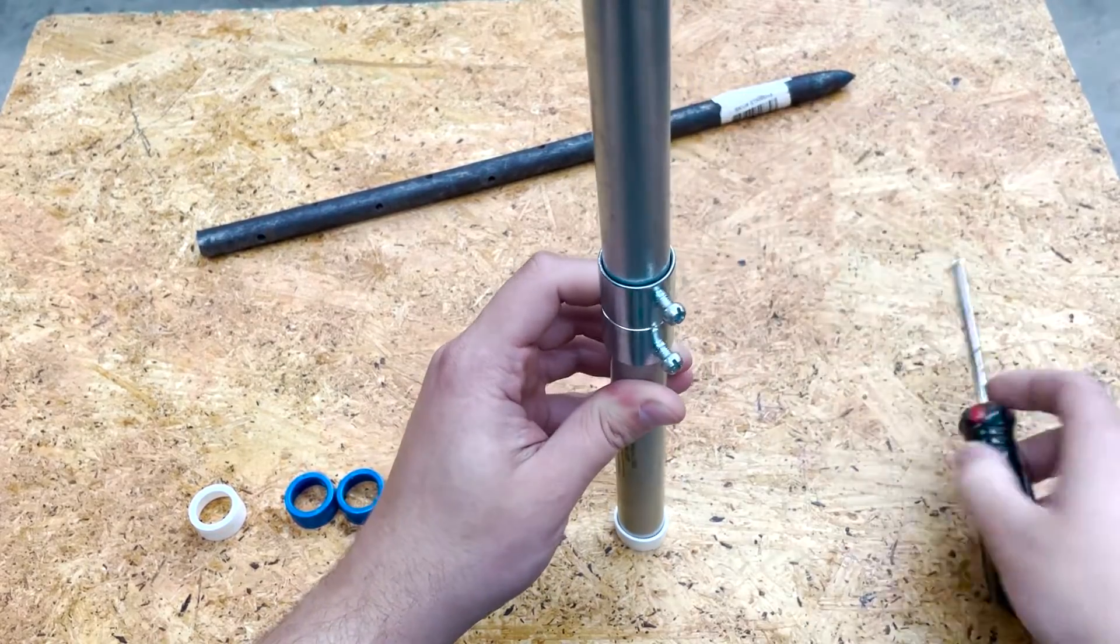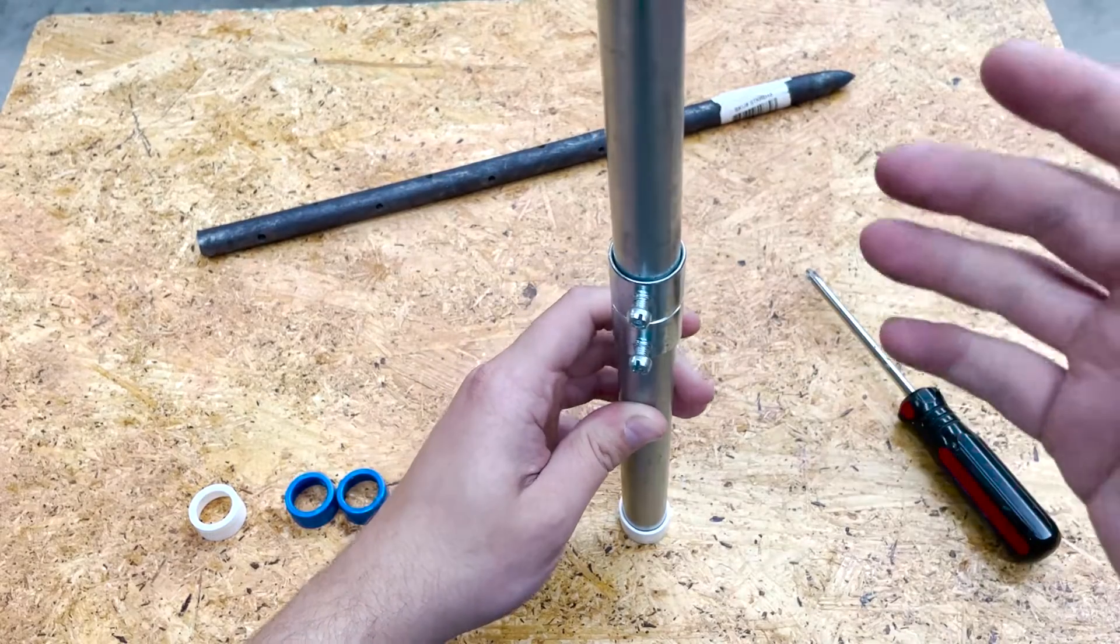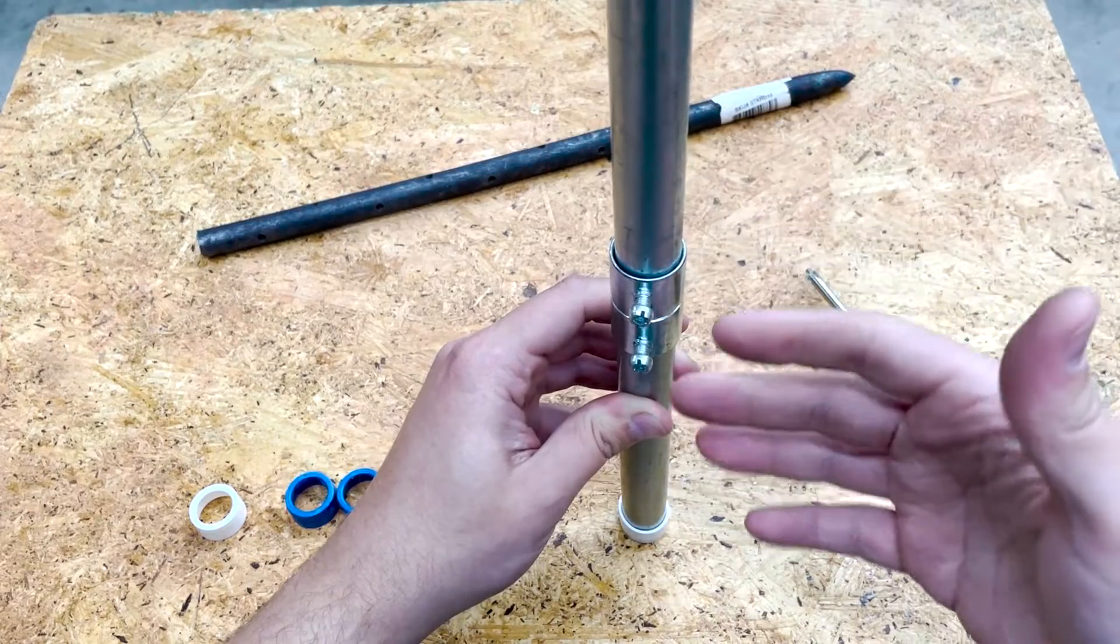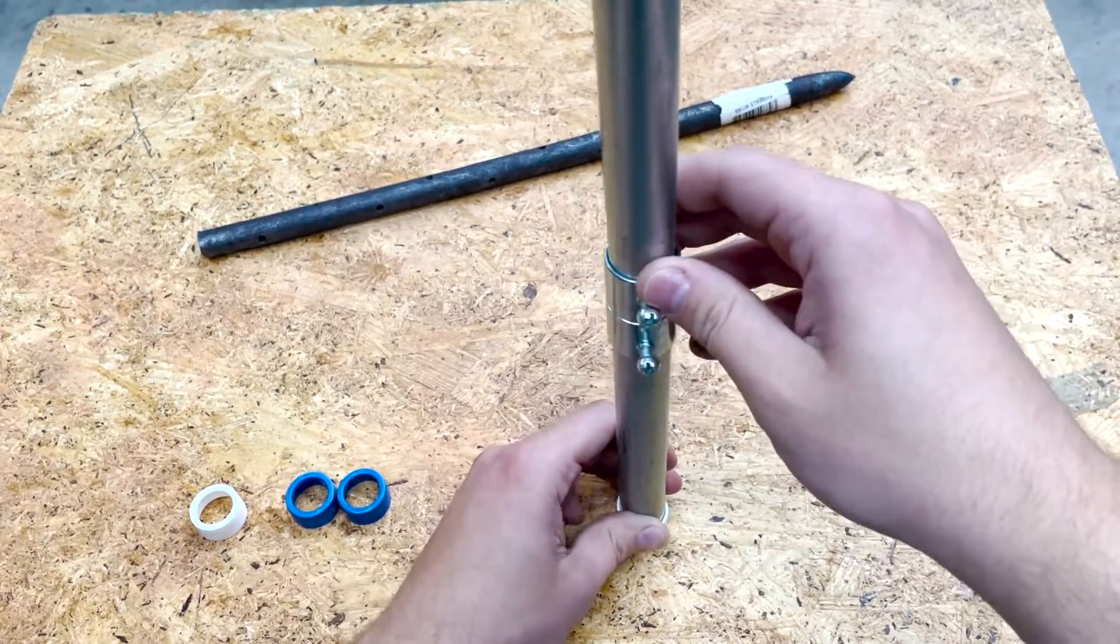It's still got some slop in there. Of course, I haven't tightened it down yet, but regardless, it still adds rigidity and keeps this middle connection from being a weak point in the build, which is really cool.